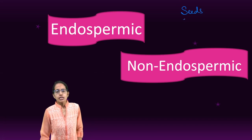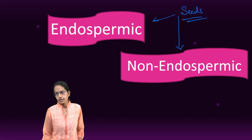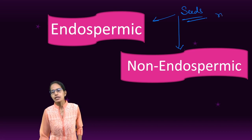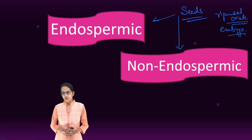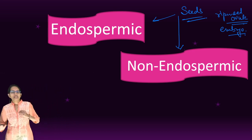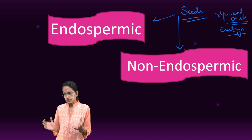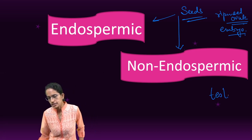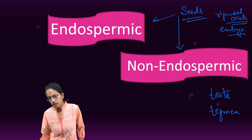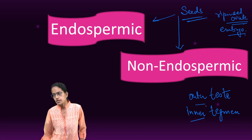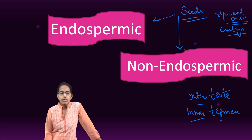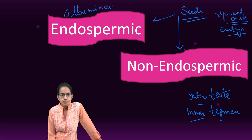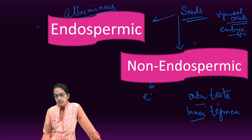Coming on to seeds. Seeds can be either endospermic or non-endospermic. A seed is nothing but a ripened ovule. This ripened ovule has an embryo, and this embryo has reserved food. There are various coverings for the seed called the seed coat. The outer one is known as testa and the inner one is known as tegmen. Endospermic seeds are known as albuminous seeds, and non-endospermic seeds are known as ex-albuminous seeds.